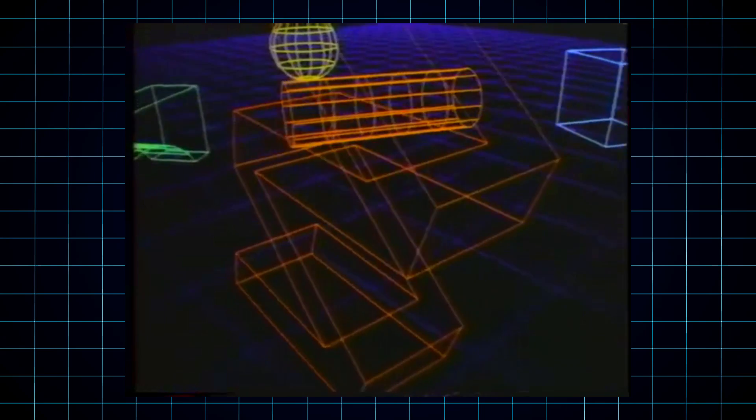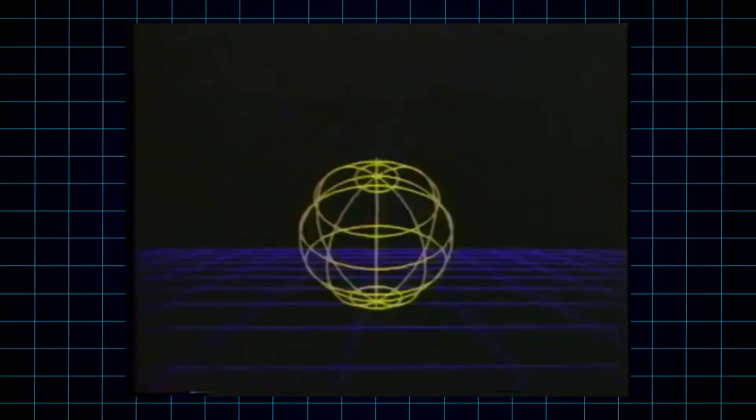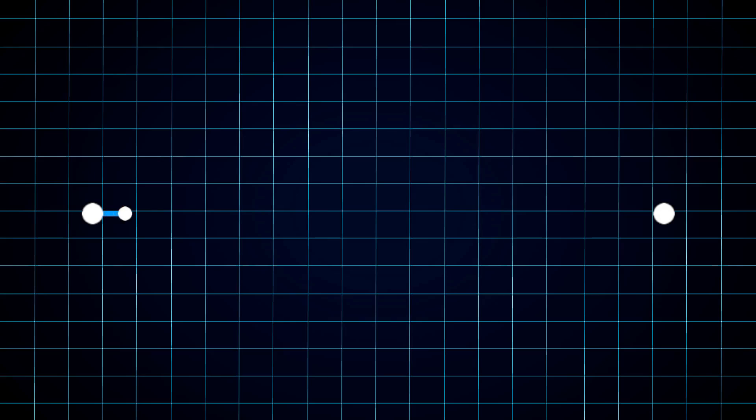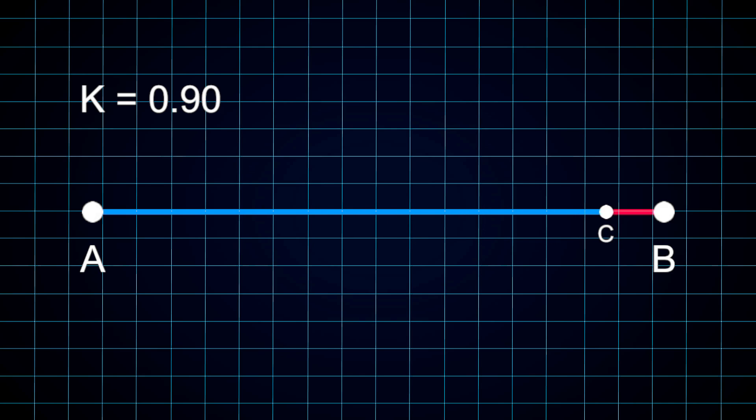To understand how he came up with the math, we must first understand the concept of linear interpolation. Let's go back to a simple straight line connecting two points, point A and point B. We can then imagine a third point, point C, somewhere along the line in between the points. The position of point C is determined by a number which goes from 0 to 1, which we're going to call k. At k equals 0, the point C is at the beginning of the line, and for k equals 1, it's at the end of the line. So as we increase k from 0 to 1, the point C travels from A to B.